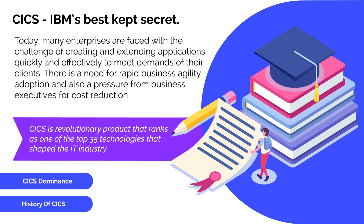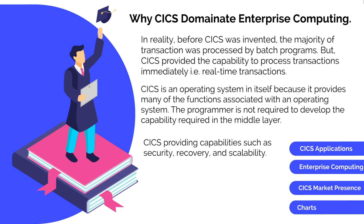Now let's move on to CICS's dominance in enterprise computing. The first and foremost reason is its transaction processing capability — CICS is processing almost 1.2 million transactions per second. So by the time you finish watching this video, CICS could have processed another billions of transactions in a day.